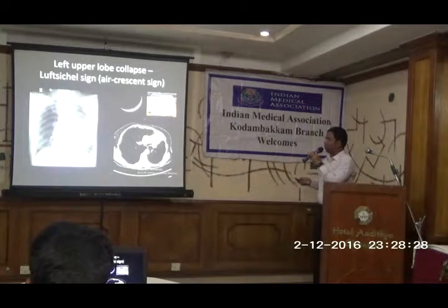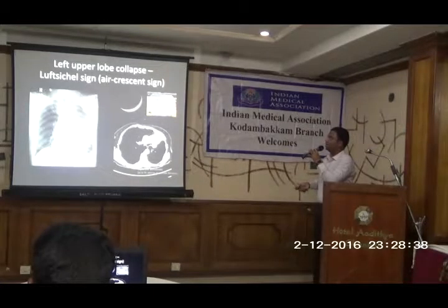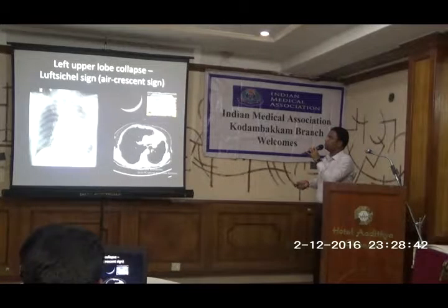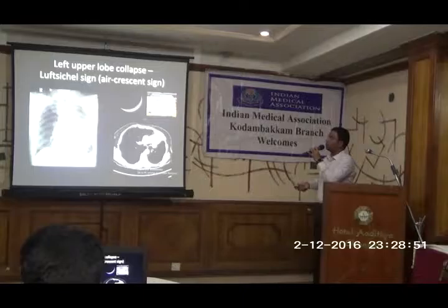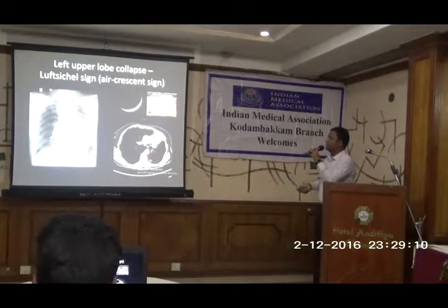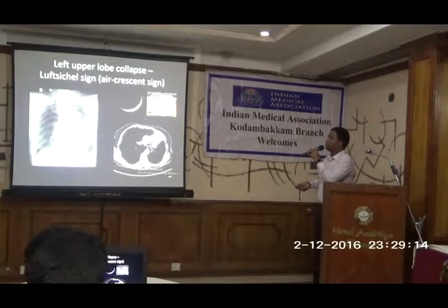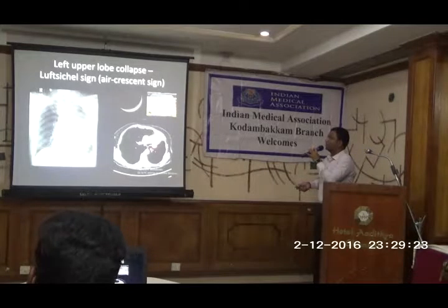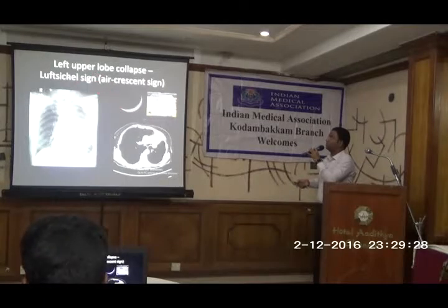Now moving on to left upper lobe collapse, which has two important findings. It is called a veil-like opacity or ground glass opacity. Apart from that, you have a small crescent lucency near the aortic knuckle — that is called the Luftsichel sign. This is because the left lower lobe hyperexpands, causing compensatory hyperinflation that outlines the aortic knuckle. That lucency is because of the air around the aortic knuckle. In German, Luftsichel means crescent — so it is an air crescent sign in the background of a veil-like or ground glass opacity.